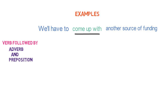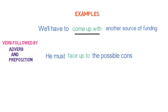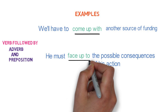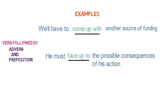Let's look into the next example. 'He must face up to the possible consequences of his action.' Here, 'face up to' is a phrasal verb having the combination of verb, adverb, and preposition.